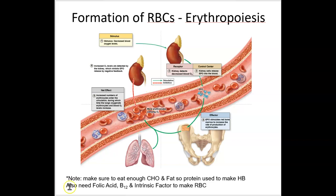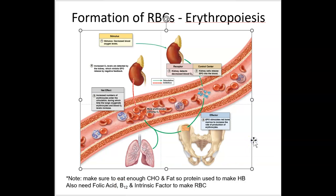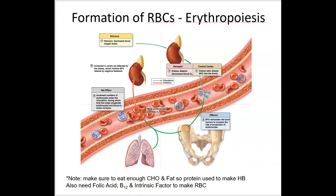In order to make red blood cells, you have to eat well. You want to use protein to make hemoglobin, not burn it for energy, so adequate carbohydrate and fat intake matters. You also need B vitamins — specifically folic acid and B12. Intrinsic factor, produced by the stomach, is required to absorb vitamin B12. That's why B12 is often given as an injection.